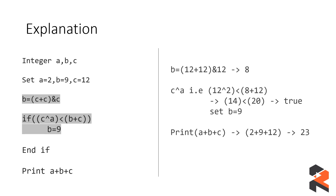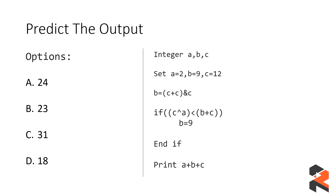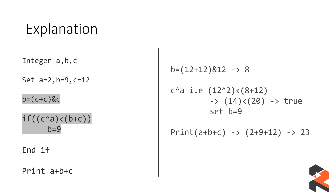Since 14 is less than 20, the condition evaluates to true and we set b = 9. But notice the value of b was already 9 — sometimes conditions are included just to consume your time. They are simply asking you to print a + b + c, which is 2 + 9 + 12 = 23. That was option B.